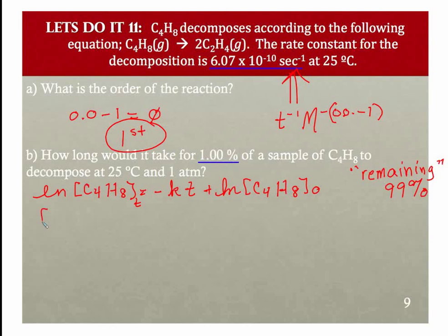This gives me 0.99 times C4H8 at time zero - so 99% of my initial remains. Now there's a couple of ways you can do this. You can actually substitute in here the number 1 and the number 0.99. I want to show you a slightly different way of doing this because the rearrangement of this is very helpful.